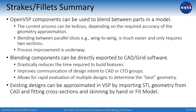To summarize: VSP components can absolutely be used to blend between parts in a model — just use them intelligently and understand the inherent limitations. It won't do a full curve-to-curve mapped constant-radius transition between two bodies without a lot of work, but for things like blending between parallel slices, wing-to-wing, or wing-to-body, you can get something like a glove-and-bat blend between a wing and a transport fuselage pretty easily. These blended components can be directly imported into either CAD or grid software. Existing CAD designs can also be approximated in VSP by importing the STL and using fit model.